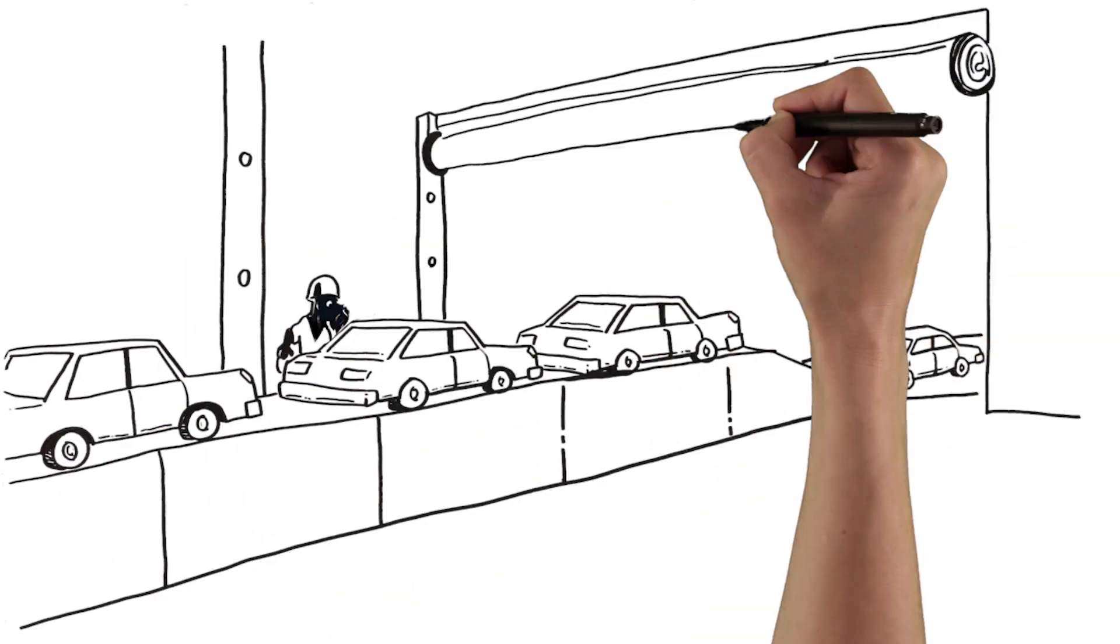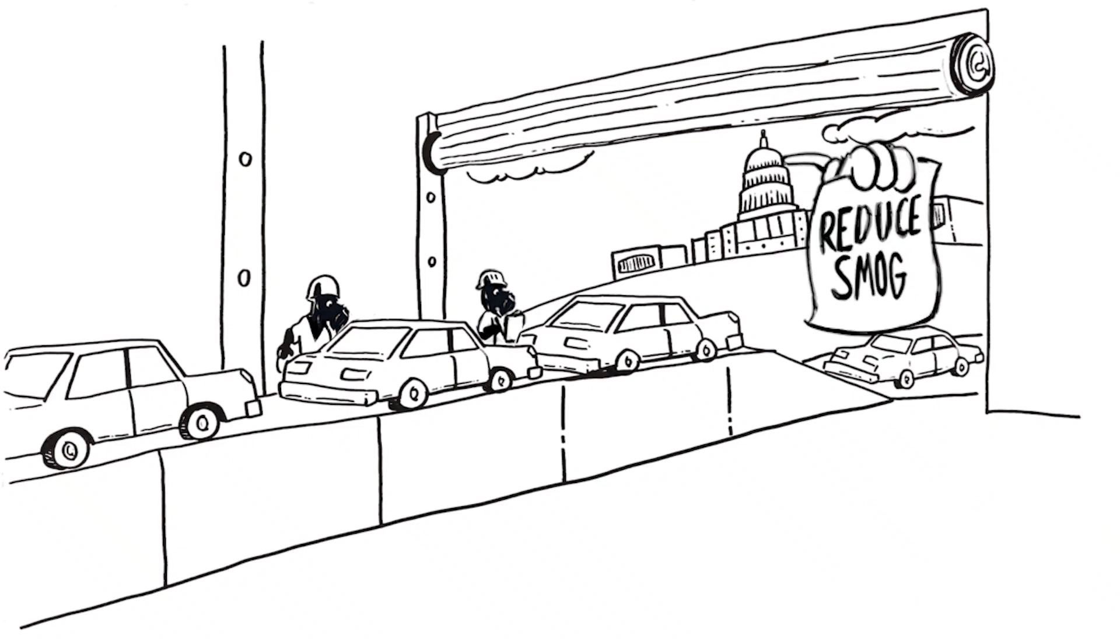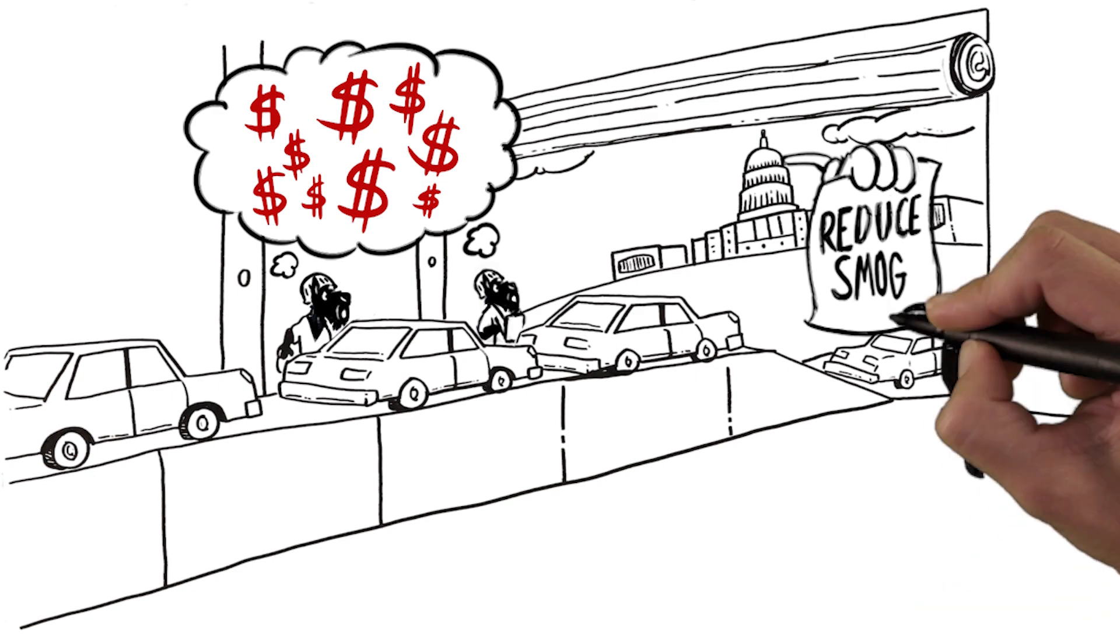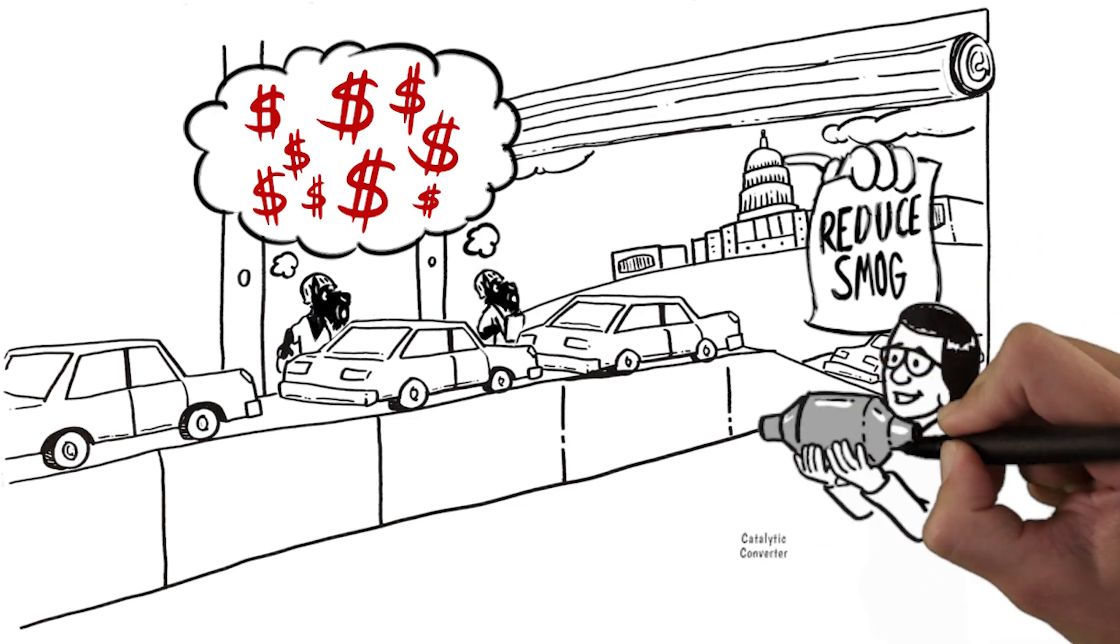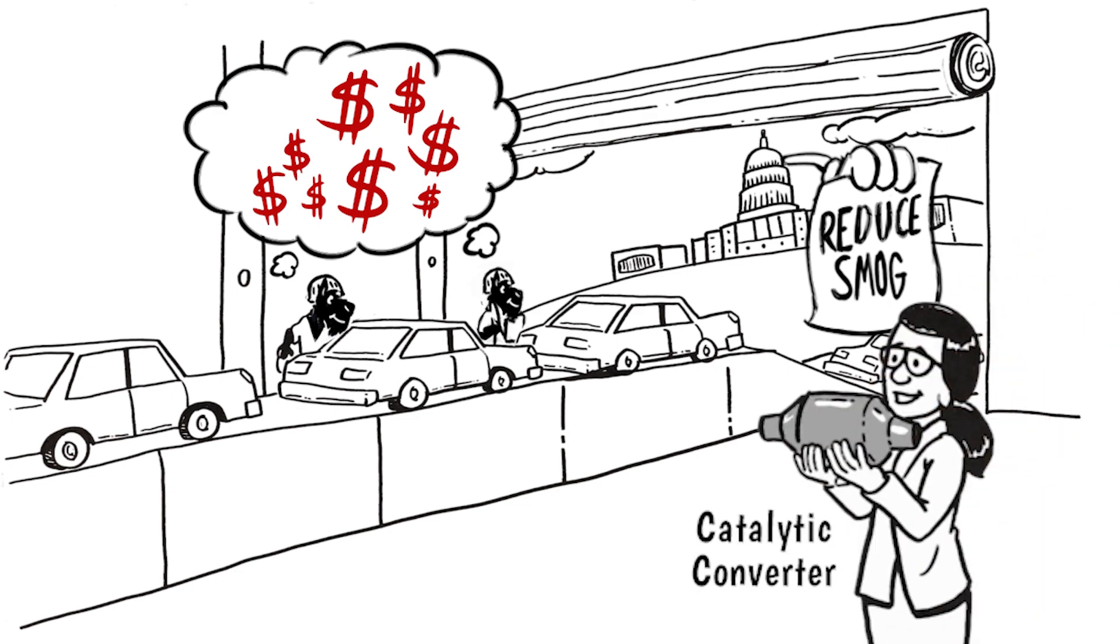The same thing happened in the auto industry when Congress decided to reduce smog in our cities. Auto companies feared the worst. But a new entrant to the industry invented a new technology called the catalytic converter that cut a huge amount of pollution out of tailpipe exhaust at a much lower cost than the companies anticipated.